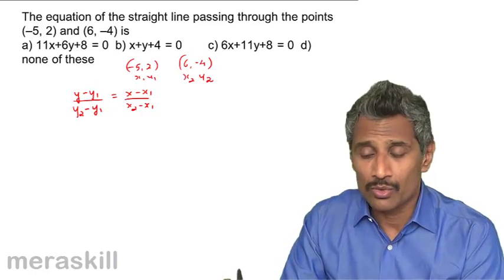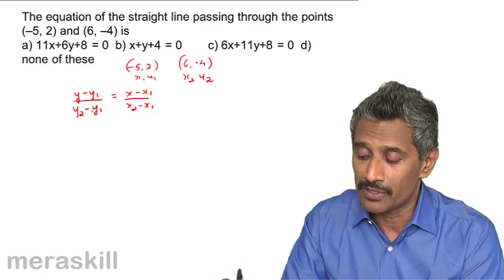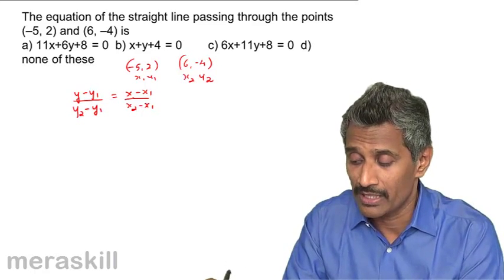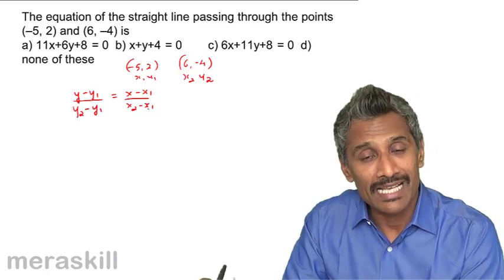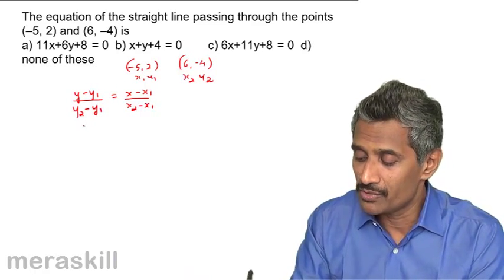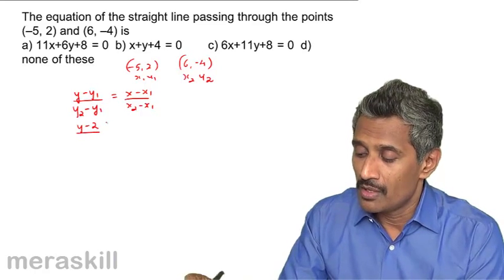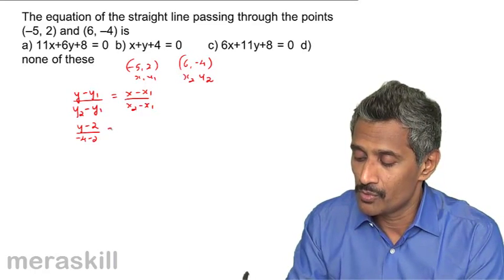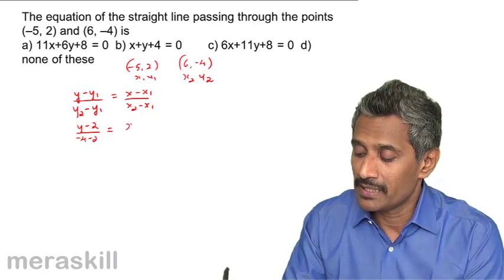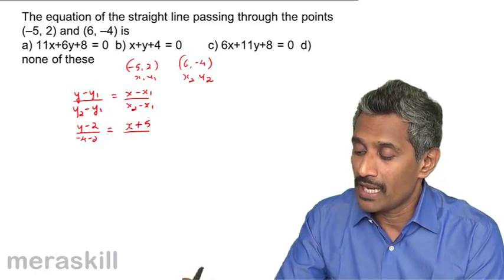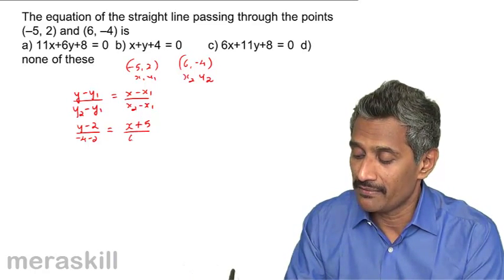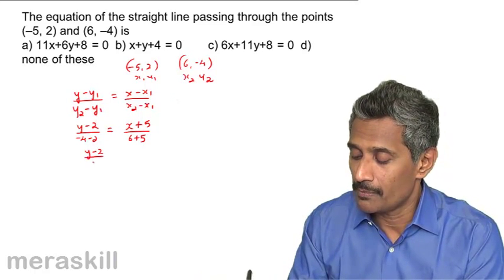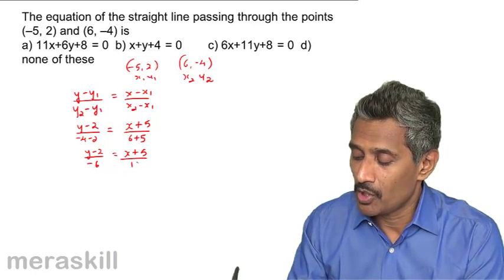You don't have to be rigid — if you interchange points, just ensure both sides correspond. Substituting: y minus 2 upon minus 4 minus 2 equals x minus minus 5 upon 6 minus minus 5, giving y minus 2 upon minus 6 equals x plus 5 upon 11.